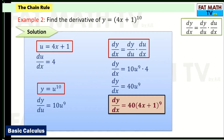If you had used the product rule or expansion here, it would take a very long time. Using the chain rule, we express it as a power of 9 and that gives us the final answer — no need to expand further.